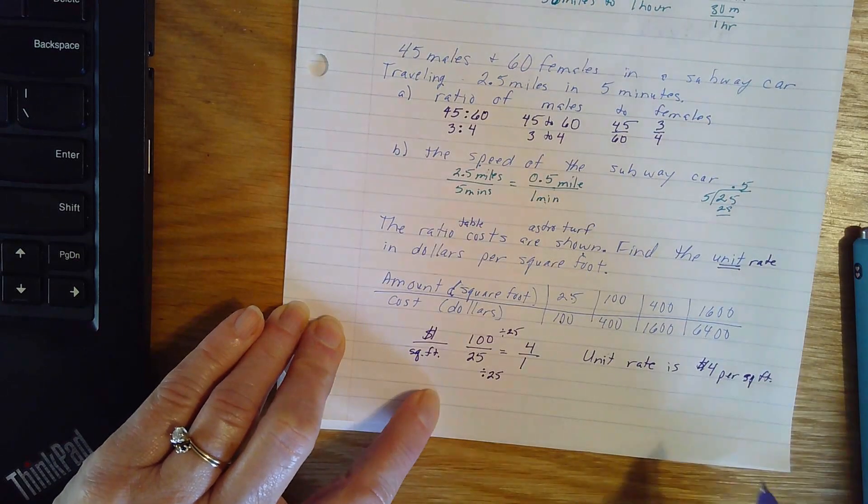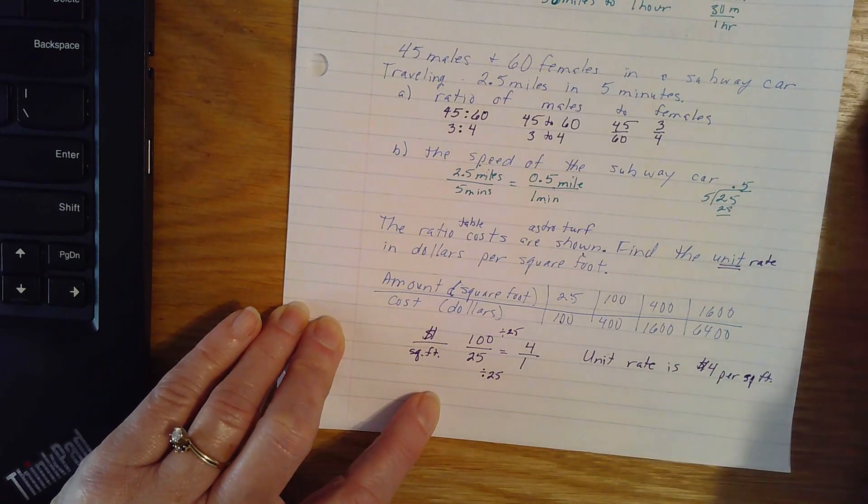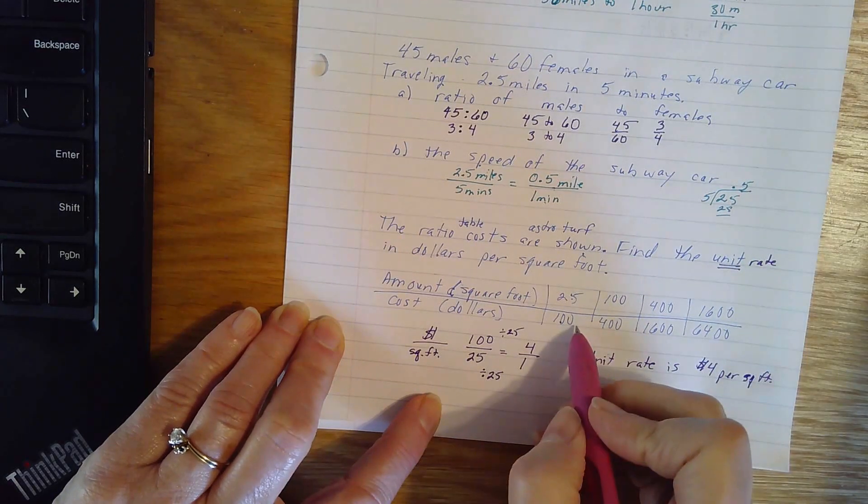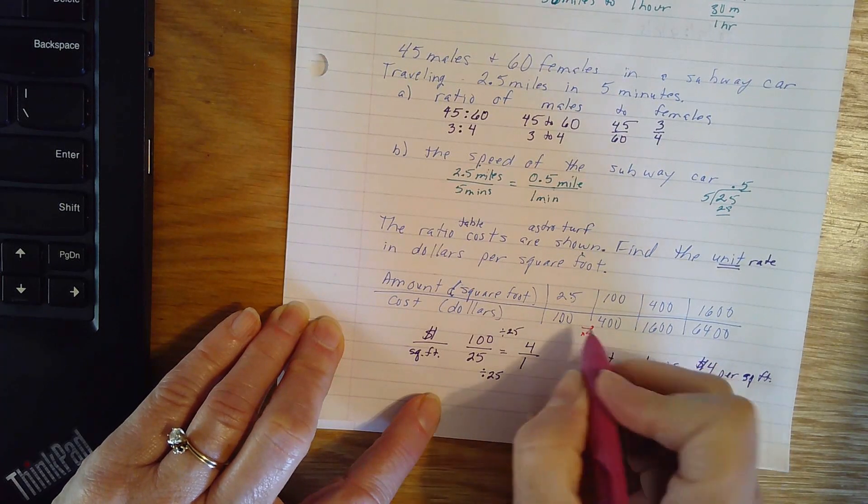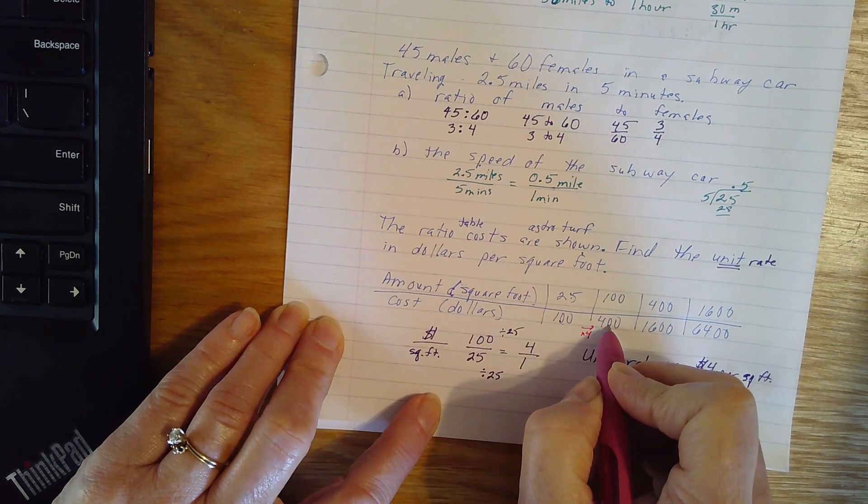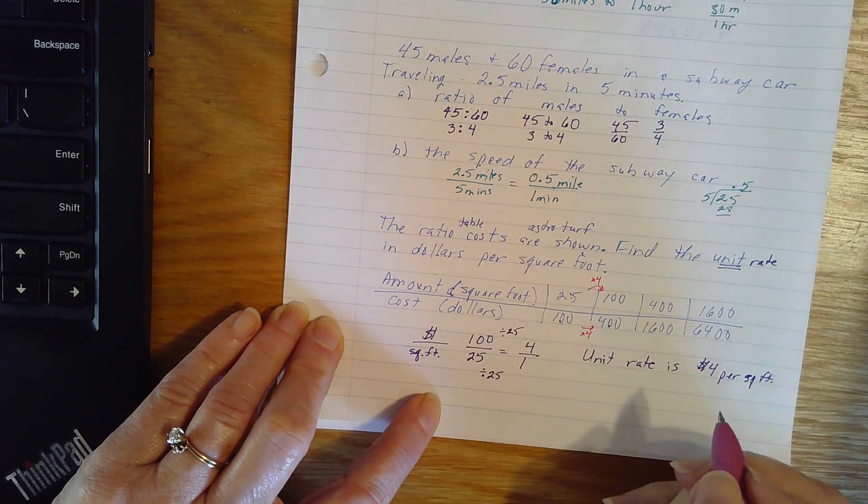So I am going to divide by 25, both top and bottom. So my unit rate is $4 per square foot. Now just as a quick aside, something that's important to be aware of. When I'm looking at this, if I multiplied the bottom by 4, 100 times 4 is 400, I have to multiply the top by 4 also.